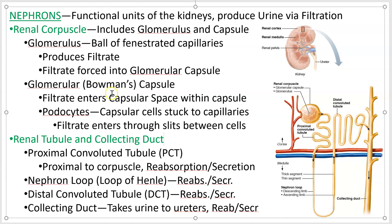Blood is forced out of the glomerulus into the capsule, entering a little space called the capsular space. There are cells on the inside of that capsule called podocytes — meaning foot cell — which I'll show a little bit later. They are responsible for allowing liquid to seep through their little foot processes, which act as slits. So a bunch of stuff is dumped into this capsule, and this is happening thousands and thousands of times per kidney all the time. Then you enter the renal tubule.